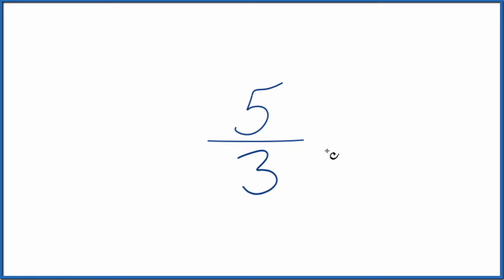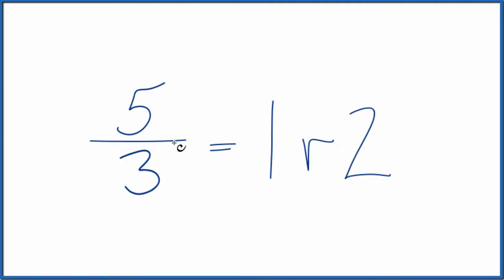Let's divide 3 into 5. So 3 goes into 5 one time with a remainder of 2. So 5 thirds, that's 1 remainder 2.